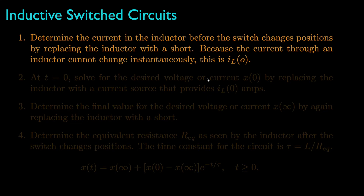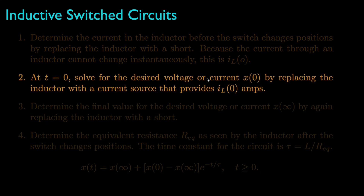Therefore, the current through the inductor before the switch changes position will be the same at the instant the switch is changed. At the time the switch is changed, t equals zero, we replace the inductor with a current source that provides the initial current, and then solve for the initial condition for the desired voltage or current.